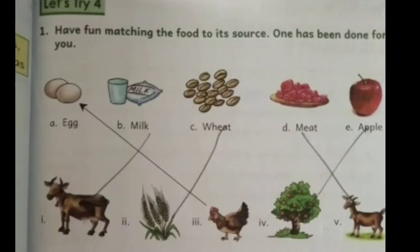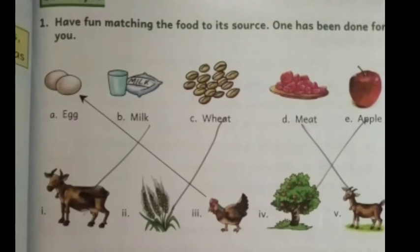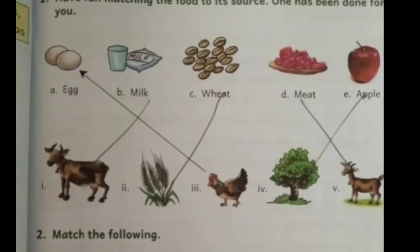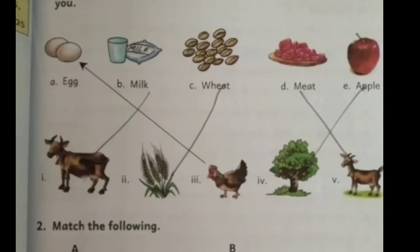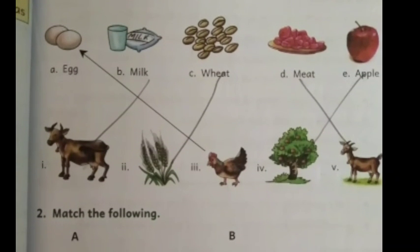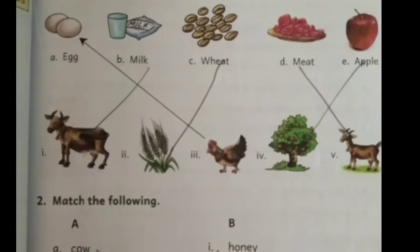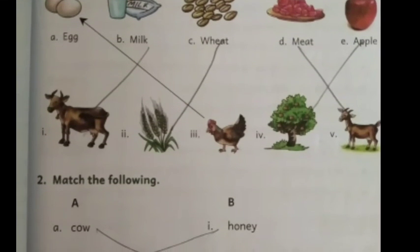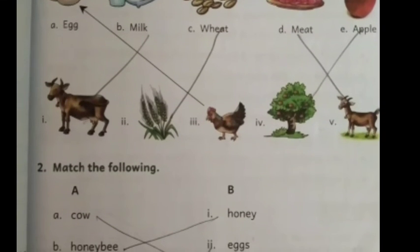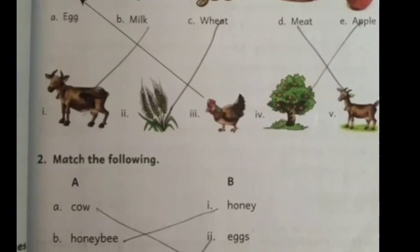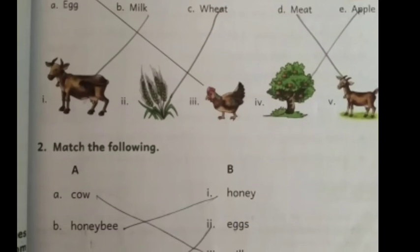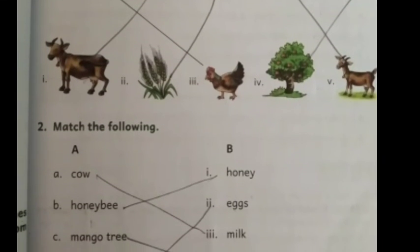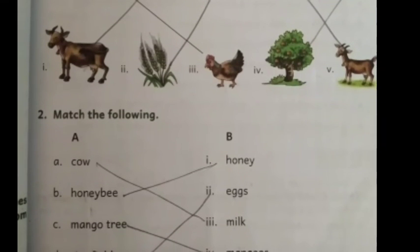Now we read, let's say 4 — have fun matching the food to its source. Here we have to match the food to its source. One has been done for you. The first picture is eggs. We will match: milk to cow, wheat, meat to goat, apple to tree. We will also match: cow to milk, honey, mango to tree, rice to rice field, and eggs.